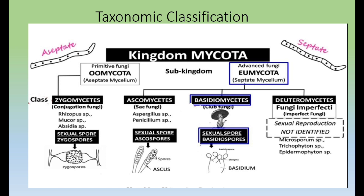The third class is Deuteromycetes, also known as Fungi Imperfecti or imperfect fungi. They are called imperfect fungi because no sexual reproduction method has been identified in this class. Examples include Microsporum species, Trichophyton species, and Epidermophyton species.